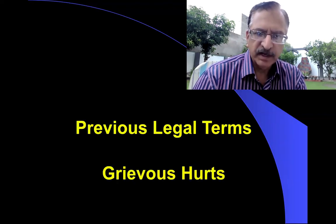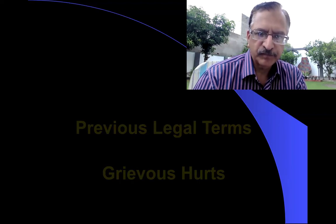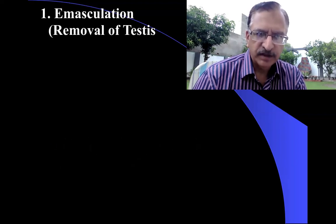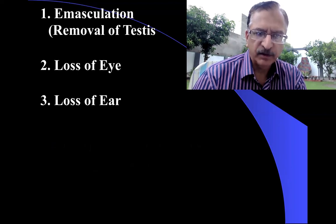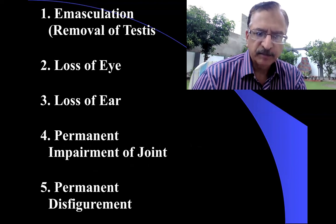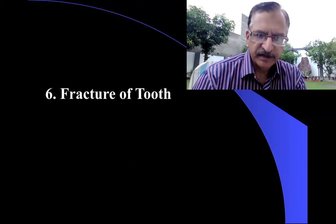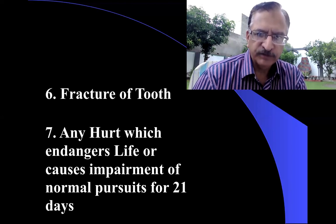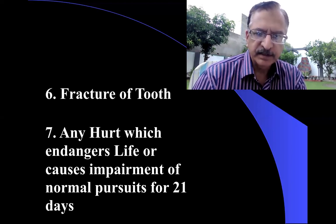Grievous hurts — these were the previous legal terms. Under Section 320 PPC, the grievous hurts were: emasculation (removal of the testes), loss of eye, loss of ear, permanent impairment of a joint, permanent disfigurement, fracture of a tooth, and any hurt which endangers life or causes impairment of normal pursuits for 21 days. You can imagine that a fracture of a tooth and a fracture of a femur differ in severity, but they were both placed under the section of grievous hurts.